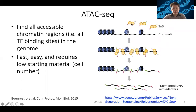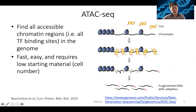We use a transposase, which can go into the open chromatin and cut, and then tag the end of the cut with different sequences. This can then directly be amplified and through high-throughput sequencing, sequenced out. We can control the digestion conditions and also select the relatively shorter fragments for sequencing.